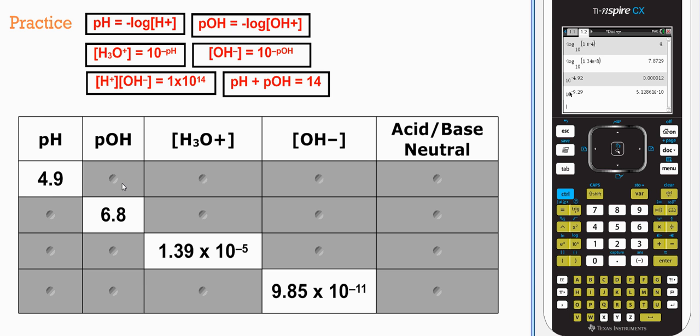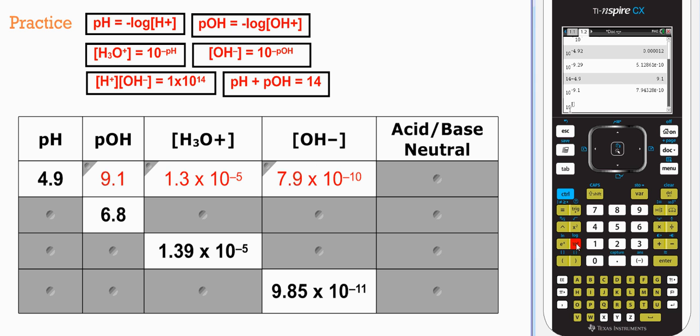First of all, if we're given a pH, getting pOH is as simple as subtracting 14 minus that value we were given. I get 9.1. And then we can use one or both of these to get these two values. It's pretty straightforward. So I'm going to go ahead and get pH back to hydronium concentration by doing 10 to the negative pH to get hydronium. So 10 to the power of negative 9.1. I went backwards. I got hydroxide concentration here because I jumped over and saw the pOH because it was red. But if you do 10 to the power of negative 4.9, we should get 1.3×10^-5.